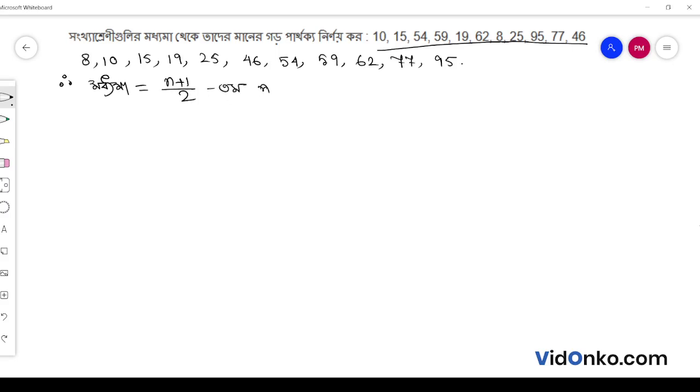Now look, I want to write here n plus 1, which is 11 plus 1 by 2. This equals 12 by 2, which equals 6. So we need the 6th term.